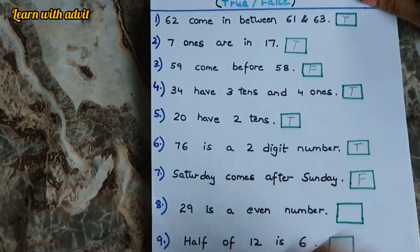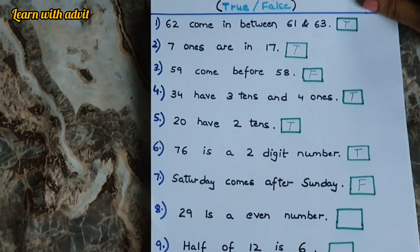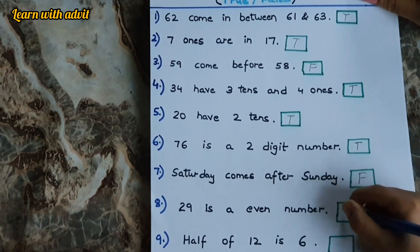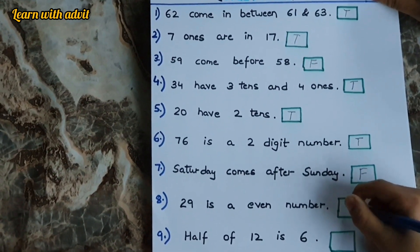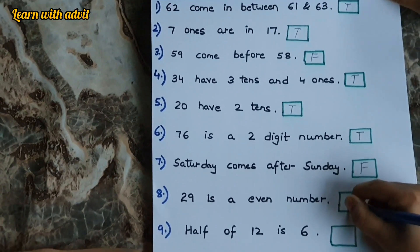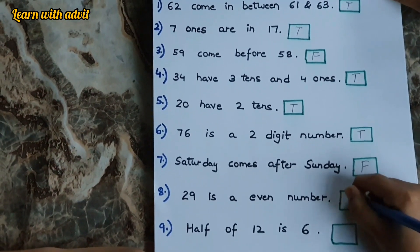29 is an even number? No. Because one block is sticking out. It's an odd number. Odd numbers are sticking out blocks and even numbers have flat tops. So it's an F.